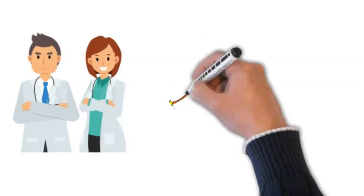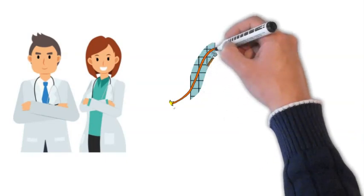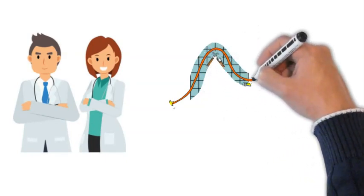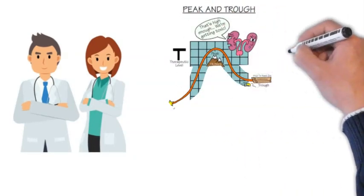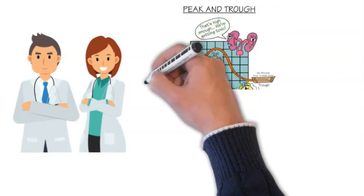Think about a wave with peaks and valleys. The amount of tacrolimus in the bloodstream follows this pattern. When you take tacrolimus, your body absorbs the medication, causing the amount in your bloodstream to rise.